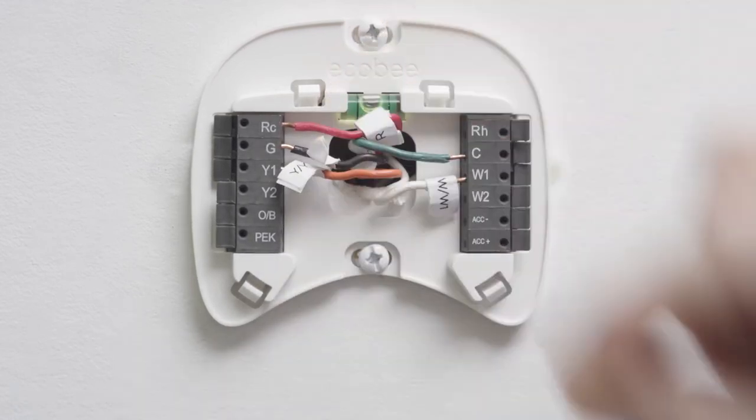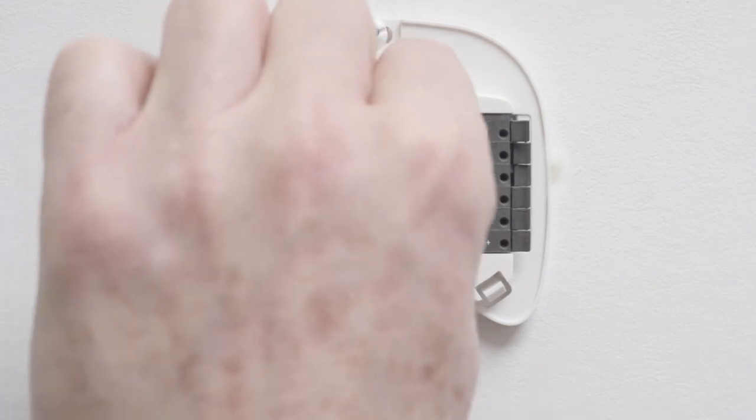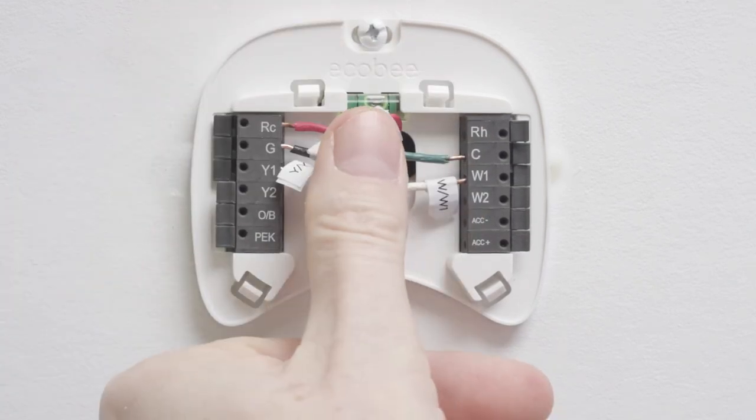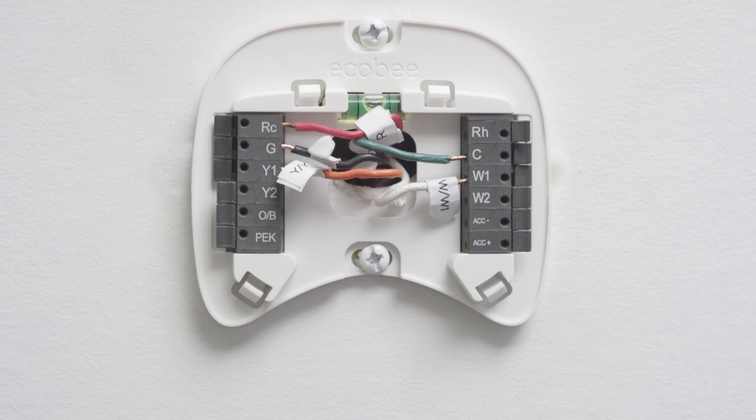Once you've connected your new thermostat backplate, push any excess wiring back into the recess of the wall. This will make sure your thermostat sits flat against the backplate and doesn't rock or tilt.